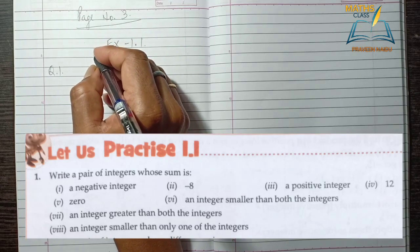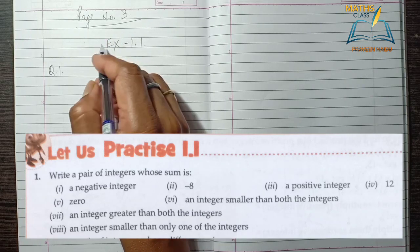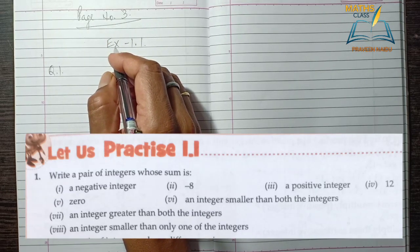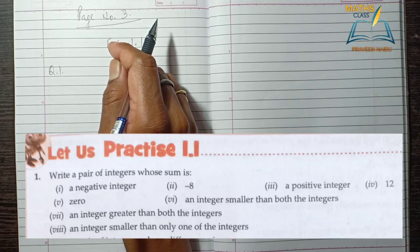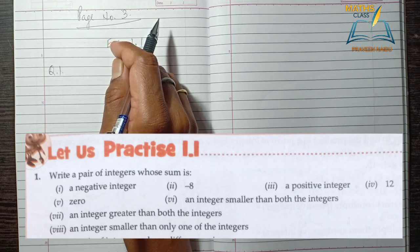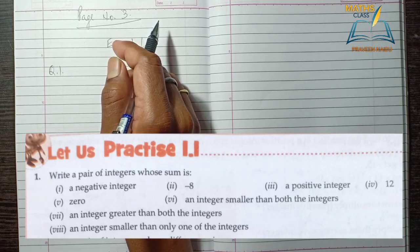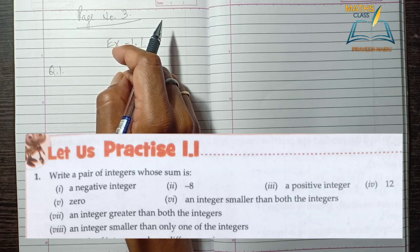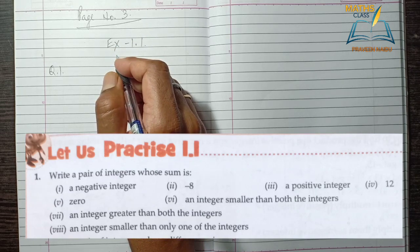The first question: you have to write a pair of integers whose sum is a negative integer. If you want to find a negative integer result, there are two ways. Either you take both integers negative, and when you sum them, the result is a negative integer.